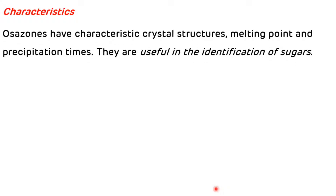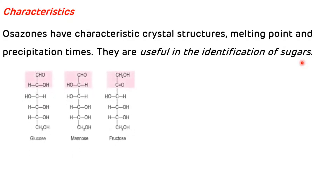Now we will see the characteristic crystals of various sugars. Osazones have characteristic crystal structures, melting points, and precipitation times, which is why they are useful in the identification of sugars.